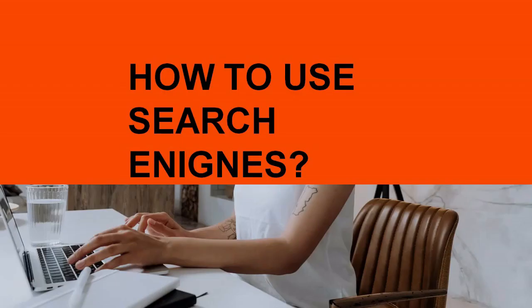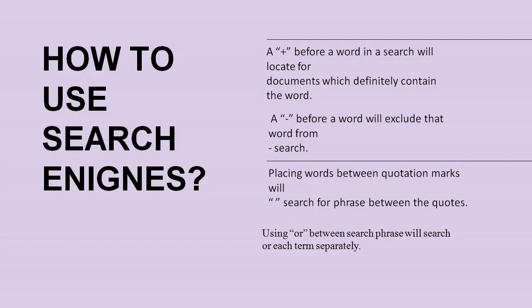How to use search engines? There are different procedures to search. A plus before a word will locate documents which definitely contain that word. A minus before a word will exclude that word from the search. Placing words between quotation marks will search for the exact phrase between the quotes. Using OR between search phrases will search for each term separately.